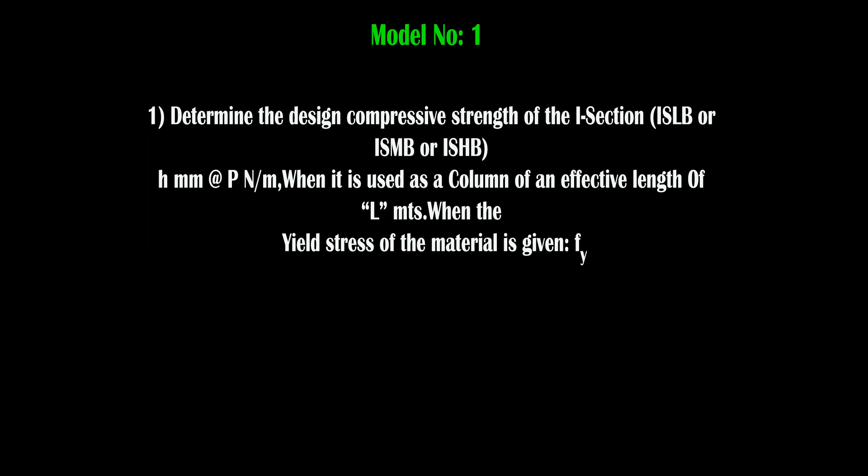In this question, the effective length is directly given. In the exam, you may also get the original length, which you have to convert into effective length. The yield stress of the material is given as Fy. In model number 1, we determine the design compressive strength of an I section of H mm at the rate P newton per meter, used as a column of effective length L meters, with a given yield stress.